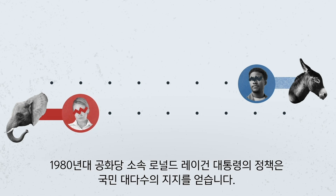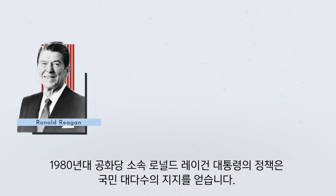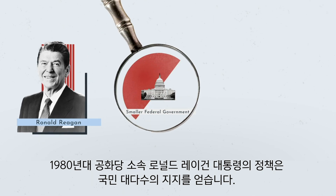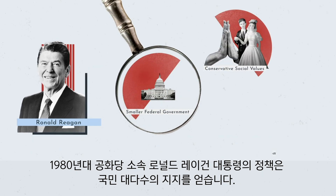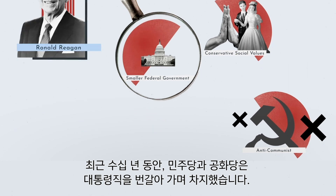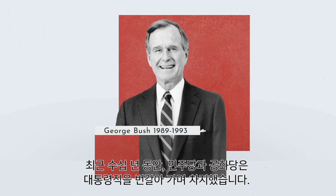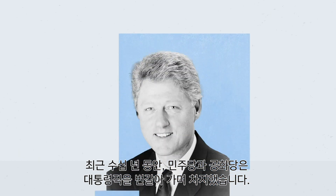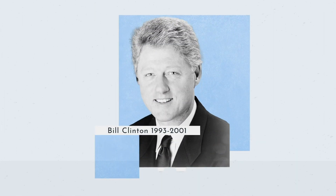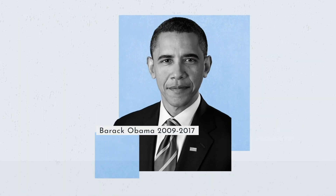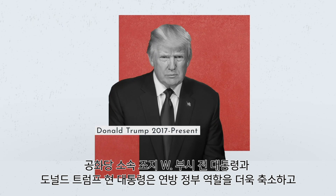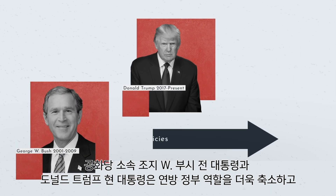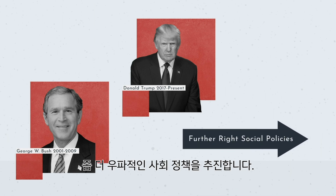In the 1980s, President Ronald Reagan wins over a large majority of the country with his policies. In recent decades, Democrats and Republicans trade control over the presidency. Recent Republican presidents George W. Bush and Donald Trump champion an even smaller role for the federal government and move further right on social policies.